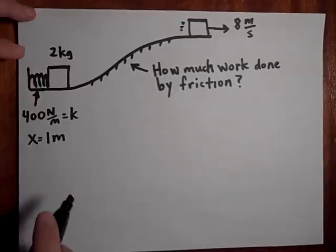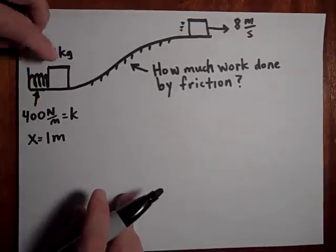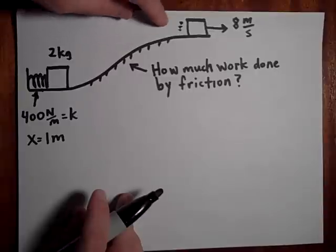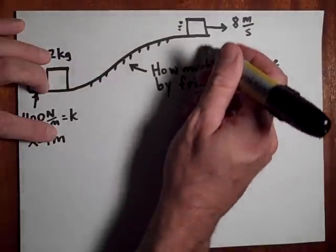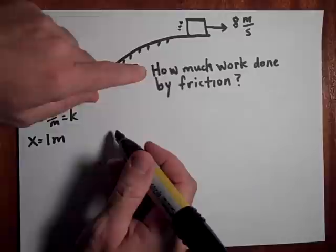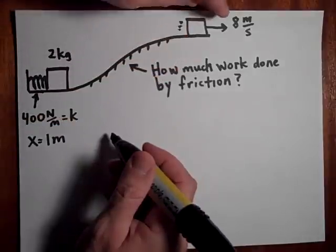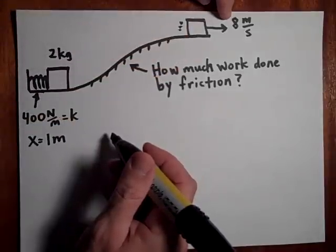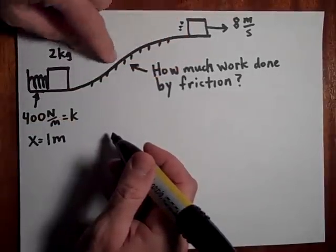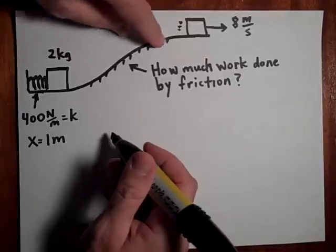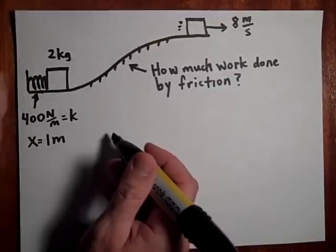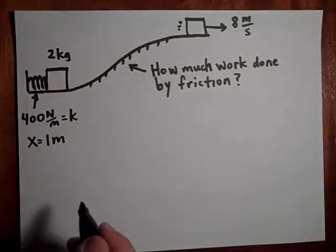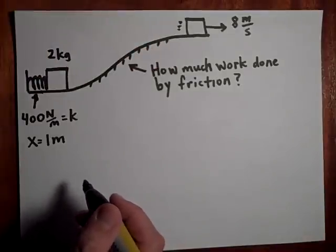All right, so now we have a spring, same setup, except this time the height of the hill is 5 meters again, but this time I'm going to tell you that it gets up here with 8 meters per second of speed because there's now some friction on the hill. If there's friction on the hill, you see it has less speed than it had the last time. And I want to know how much work was done by friction.